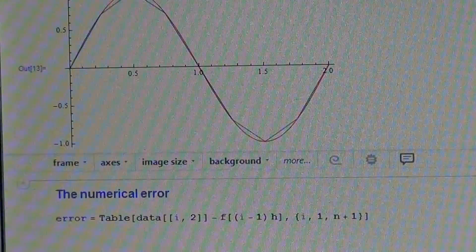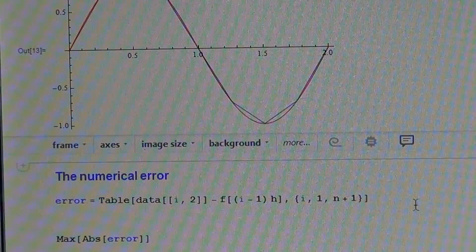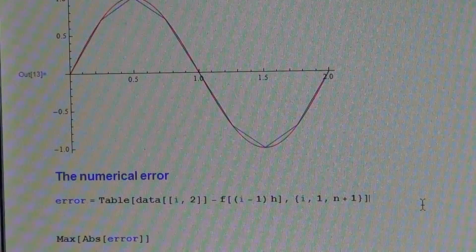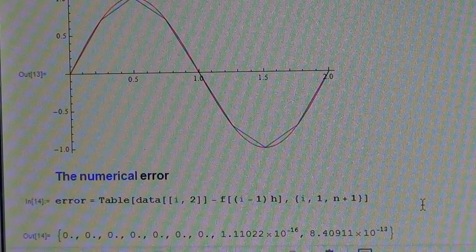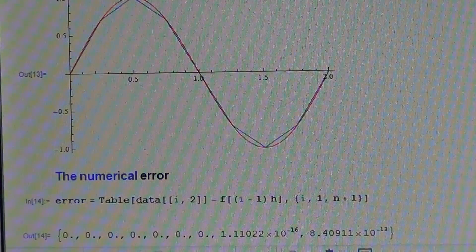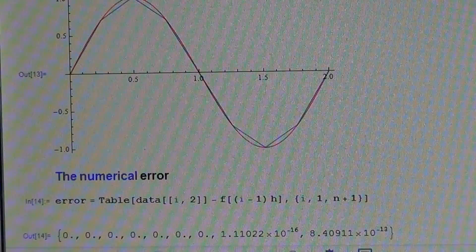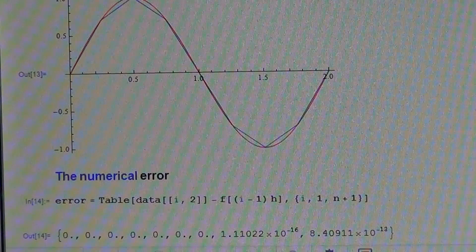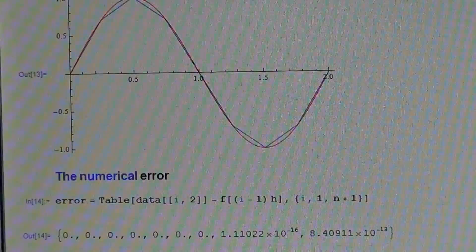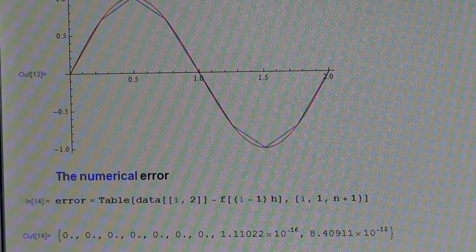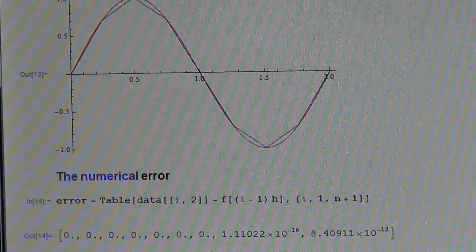We can get numerical values of the error as a difference between data points and values. The error is zero. It's not strange because we tabulated the spline at the interpolating points which has the same values by assumption.